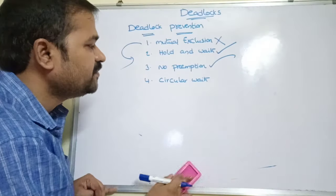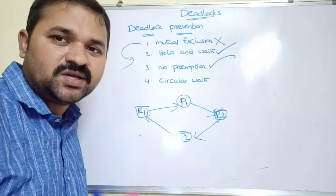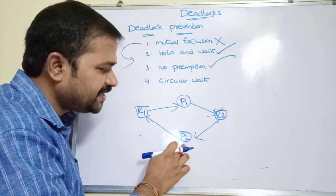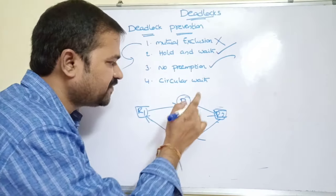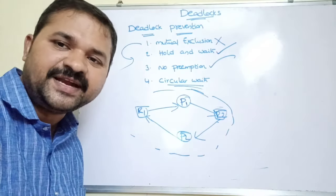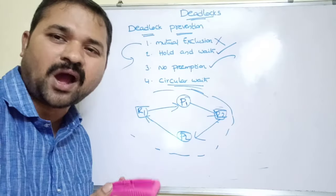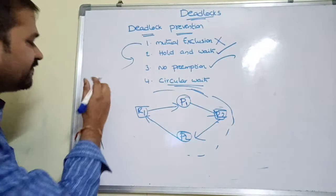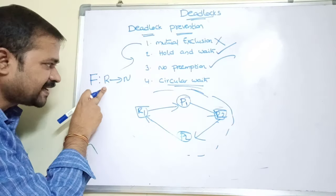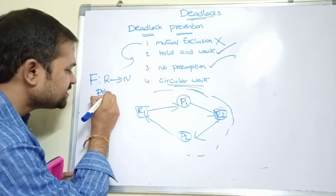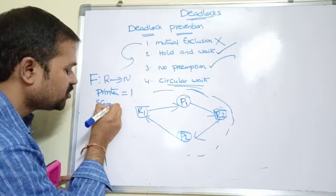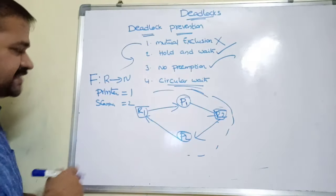Now let's check whether we can eliminate circular wait or not. In circular wait, P1 is waiting for R2 which is allocated to P2, and P2 is waiting for R1 which is allocated to P1 — each process waits in a circular fashion. To eliminate circular wait, the operating system uses a mapping function f that maps from resource type R to an integer N. An integer value is assigned to each resource type — for example, printer gets 1, scanner gets 2, and so on.